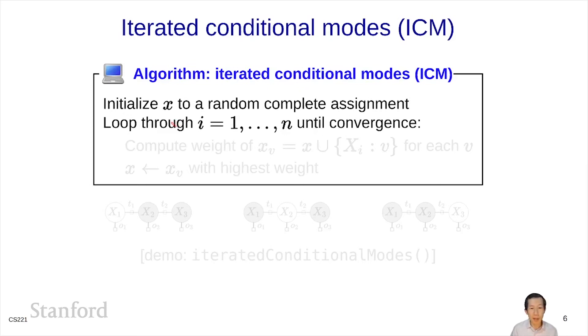What we're going to do is try to reassign xi. We're going to consider each possible value that xi could take on, and then we're going to update the current assignment x with that value. That produces an assignment xv. And then we're going to compute the weights of each of these xv's and choose the one with the highest weight. Remember in computing the weight, we only need to evaluate the factors that touch xi.